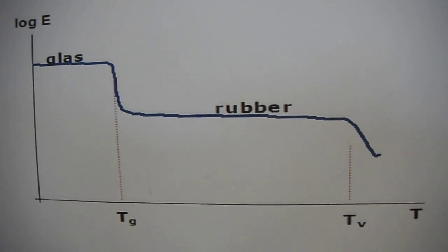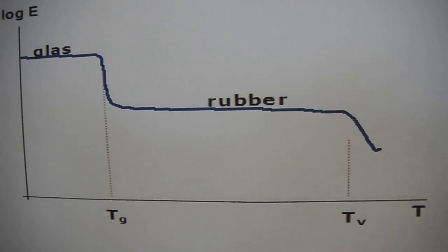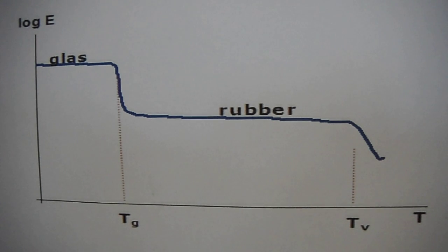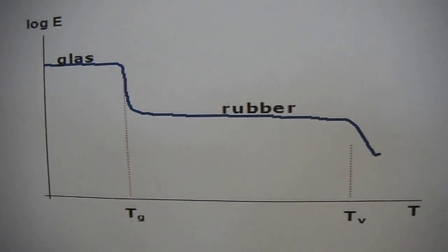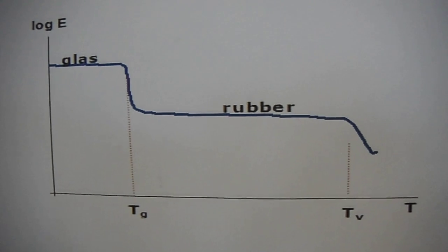The chains favor a form in which they can form as many conformations as possible. The stiffness of Young's modulus, E, is 1000 to 10,000 times lower than in the glass state.